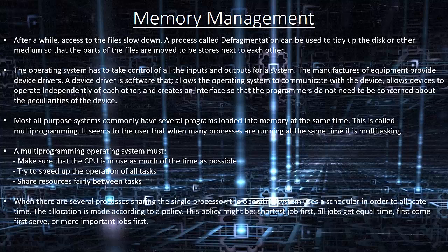When there are several processes sharing a single processor, the operating system uses a scheduler to allocate time according to a policy. This policy might be shortest job first, all jobs get equal time, first come first served, or even most important jobs first.